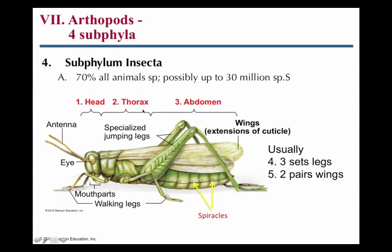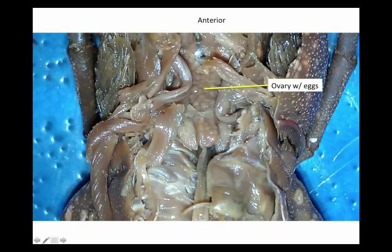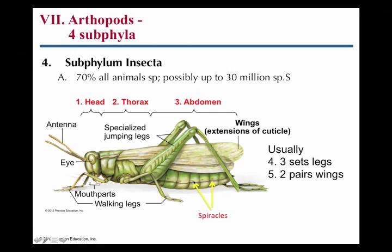Insecta is another subphylum, and this is where our grasshopper is. Unlike crustaceans, insects don't have a head-thorax fusion — they have separate head, thorax, and abdomen. They have three pairs of walking legs and antennae. The spiracles are important: they're the dots on the abdomen, just openings into the abdomen. Insects use spiracles and tracheal tubes to breathe, unlike crustaceans which use gills, and many other organisms which just use diffusion across the skin.